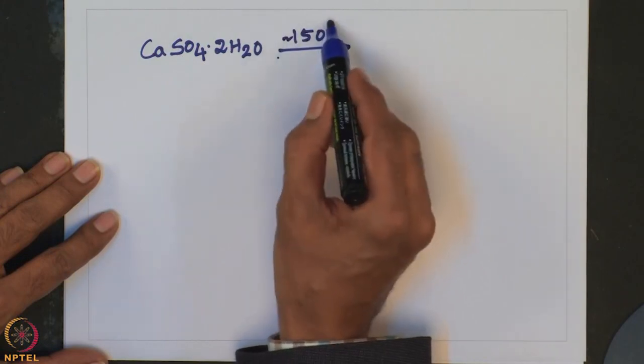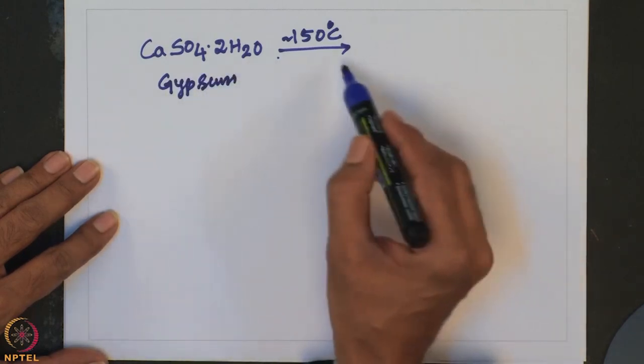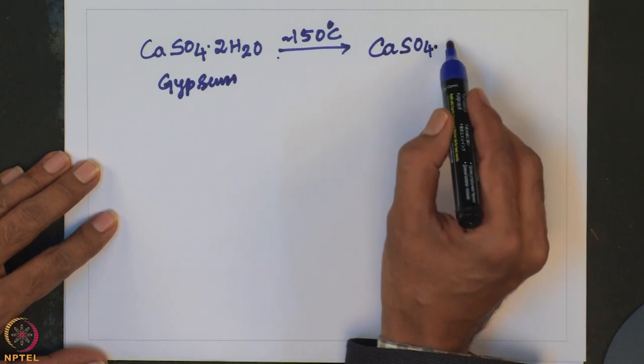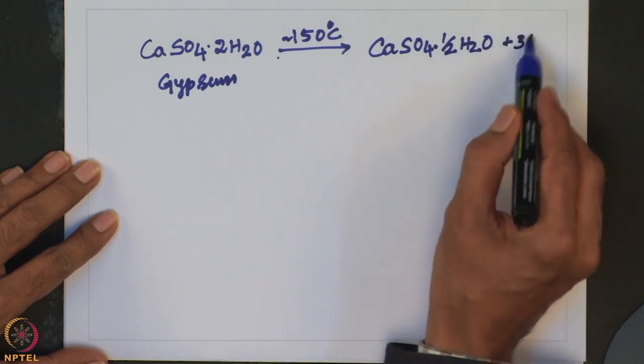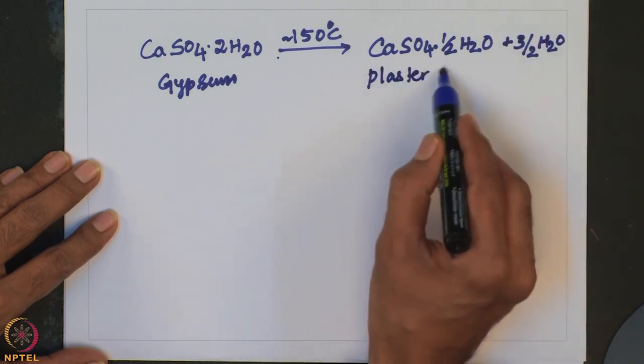Gypsum is mined on a large scale worldwide and it is calcined to form beta-hemihydrate. When you take calcium sulphate 2H₂O, that is gypsum, and heat it to 150 degree centigrade, it forms a hemihydrate having half equivalent of water, plus three-halves of water comes out. This product is called plaster of Paris.